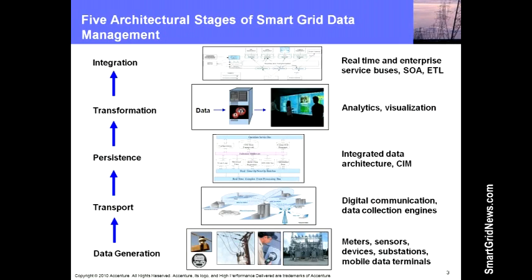From the bottom up, we think about data generation — all the things that are going to generate data from the smart grid: line sensors, meters, grid devices, field mobile field force, substations. There are lots of pieces that can produce new data. Not every smart grid has the same set, but every smart grid has the same problem making use of all the data that it does produce.